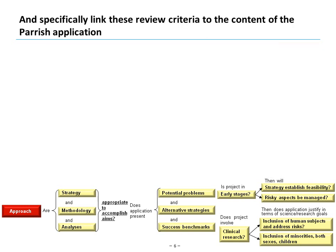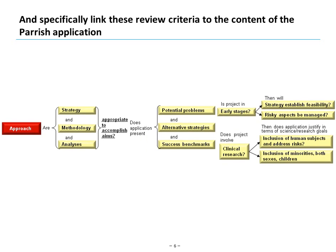The most important parts of the approach criteria are the first two columns: are the strategy, methodology, and analysis appropriate to accomplish the aims, and does the application present potential problems, alternative strategies, and success benchmarks? In both examples, and in the Parrish application, the project is not in early stages and does not involve clinical research — those are specific research funding application types — but those first two columns are really critical. Let's step back and recall the big structure of the Parrish application.